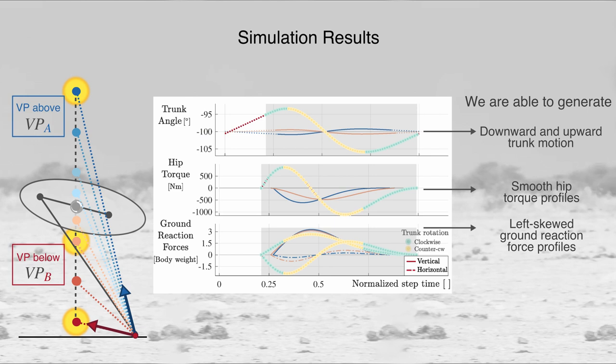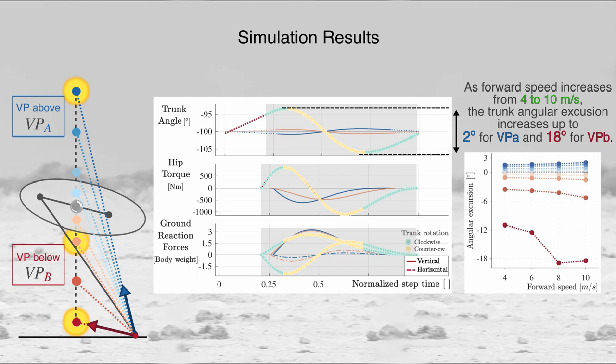With this framework, we are able to generate downward and forward trunk motions, smooth hip torque profiles, and less skewed ground reaction force profiles similar to what is observed in avians. As we increase the forward running speed from 4 to 10 meters per second, the trunk angular excursion increases up to 2 degrees for virtual points above the center of mass, and up to 18 degrees for virtual points below the center of mass.